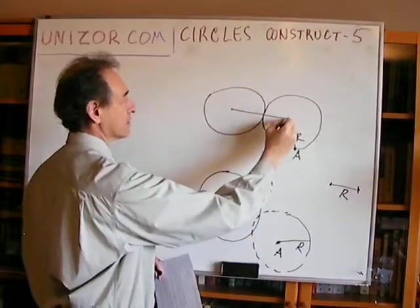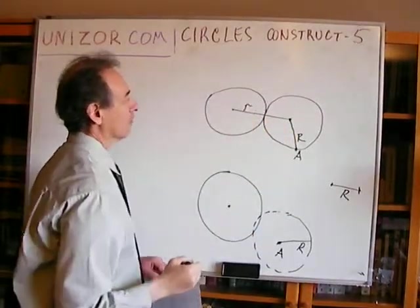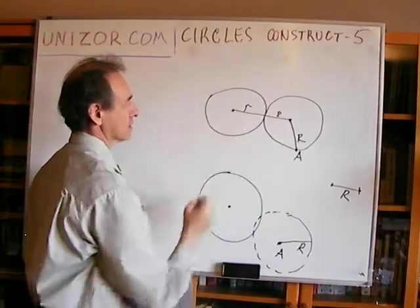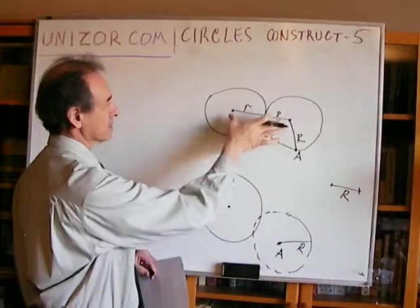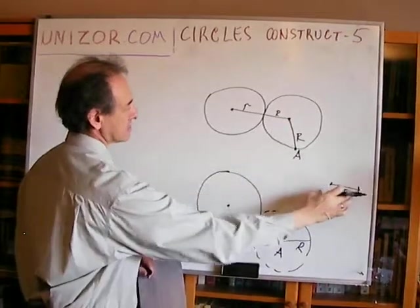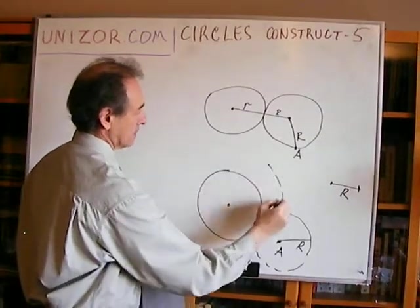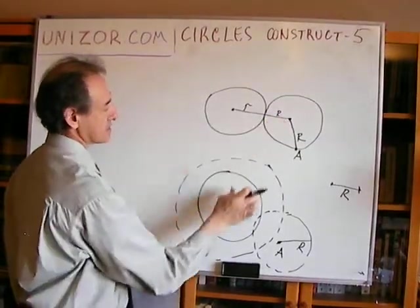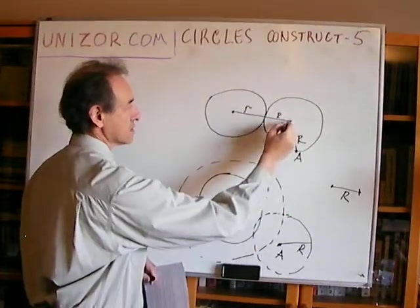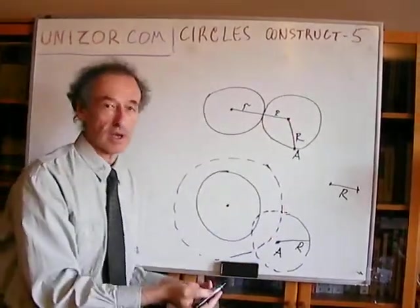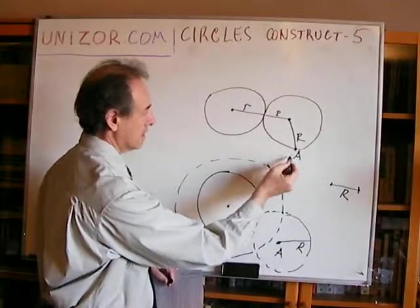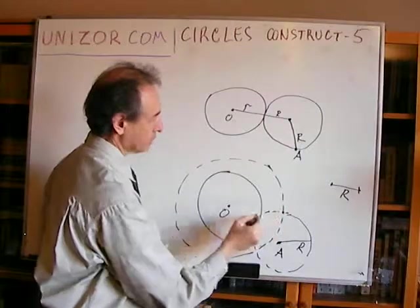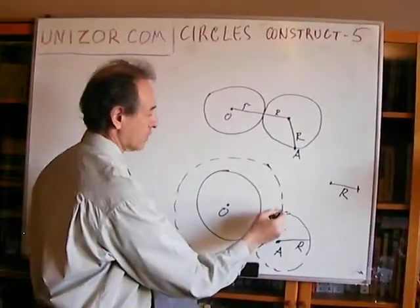At the same time, the center must be at distance r plus R from the center O of the given circle — using the combined length of its own radius plus the given radius, draw another circle. The point of intersection between these two circles is the center we're looking for, and there are two such intersections giving two solutions.